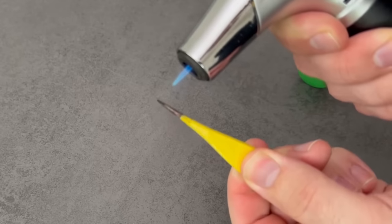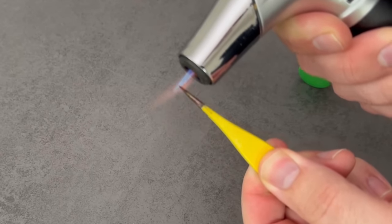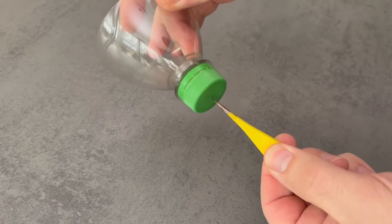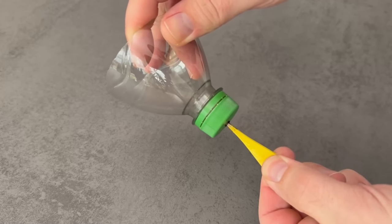Now we need a hole in the lid. Heat up some kind of object or in the best case just use a soldering iron. Now you make a hole in the middle of the lid until you can push the straw in.